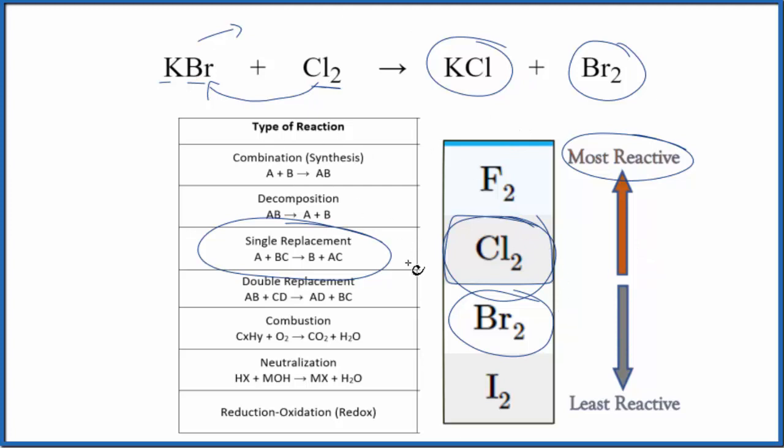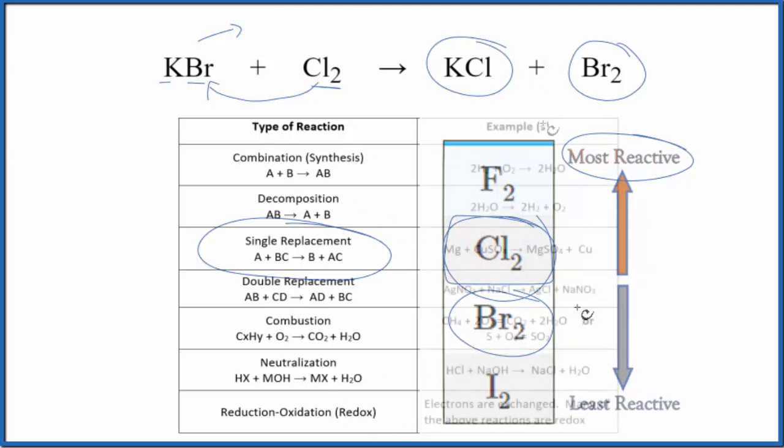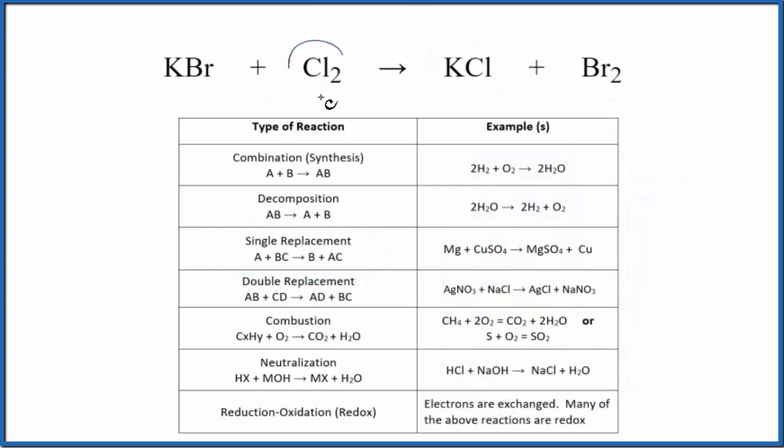So let's balance the reaction, and then talk just a little bit about redox. When we balance this equation, we can see there's two chlorines here, so we'll put a two here. Now there's two potassiums, so we have to put a two here. Those are balanced, two bromines, two bromines. So this is the balanced equation.